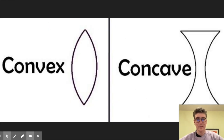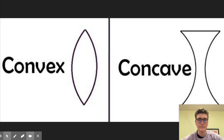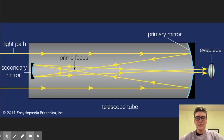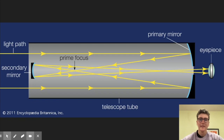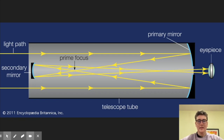Here's a picture of what a convex lens and a concave lens look like. Now onto reflecting telescopes. Reflecting telescopes are a little bit more complex, and they are the telescope of choice to view things really far away.